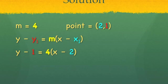So, we get m equals 4, the point itself was 2, 1, and you can see I brought down the blue 2 and plugged it in to the spot reserved for the x sub 1, and I brought down the red 1 and plugged it in for the red y sub 1, and so our equation is y minus 1 equals 4 times x minus 2.